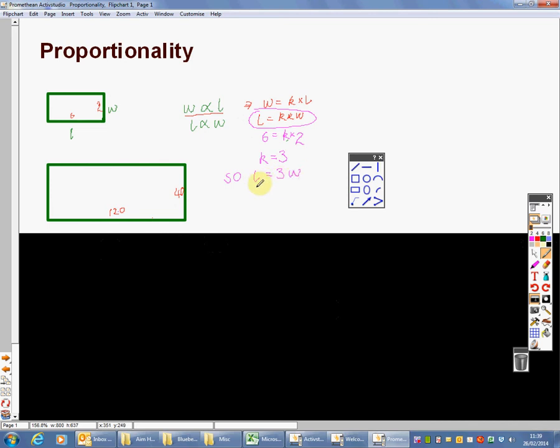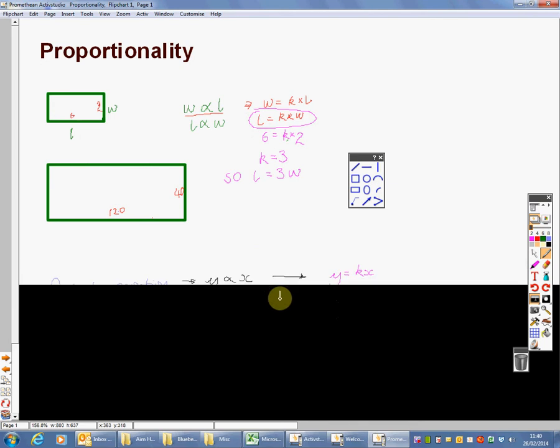So whatever width rectangle I'm given, if it's an enlargement of my original one, I can work out what the length is. Similarly, if the length was given to me, I'd know I had to divide it by 3 to give me W. That's a very brief recap of the proportionality idea.